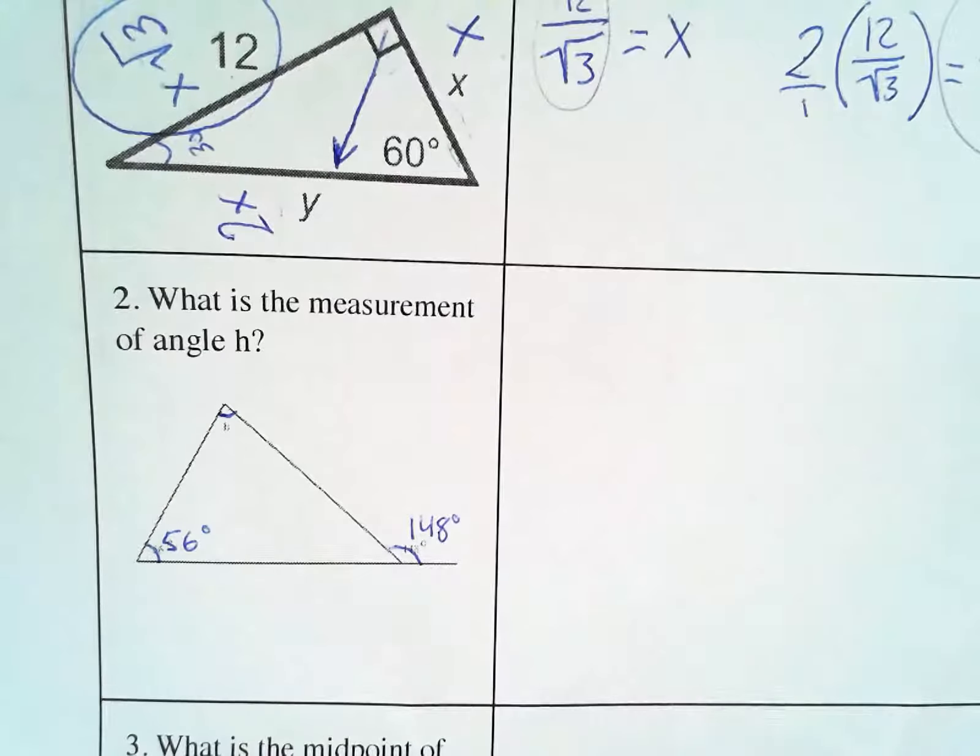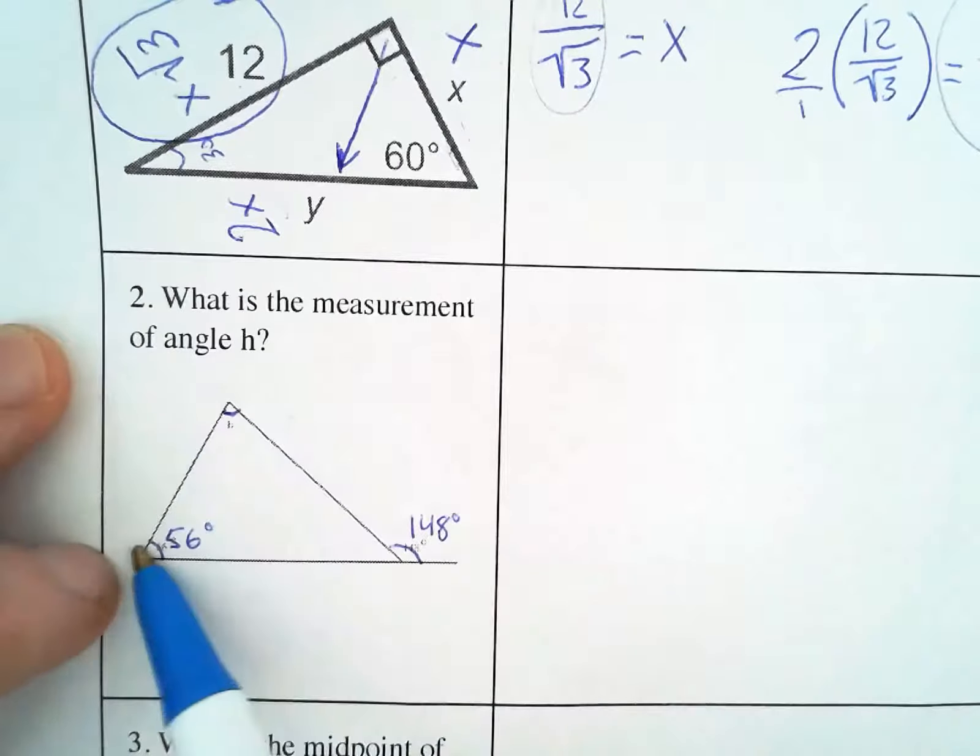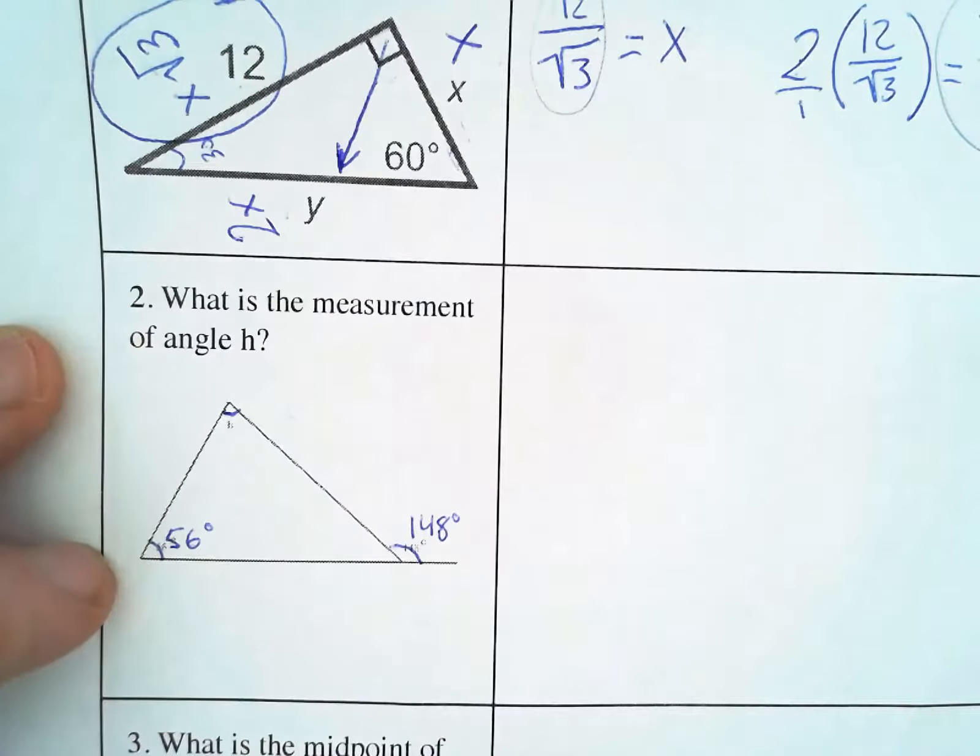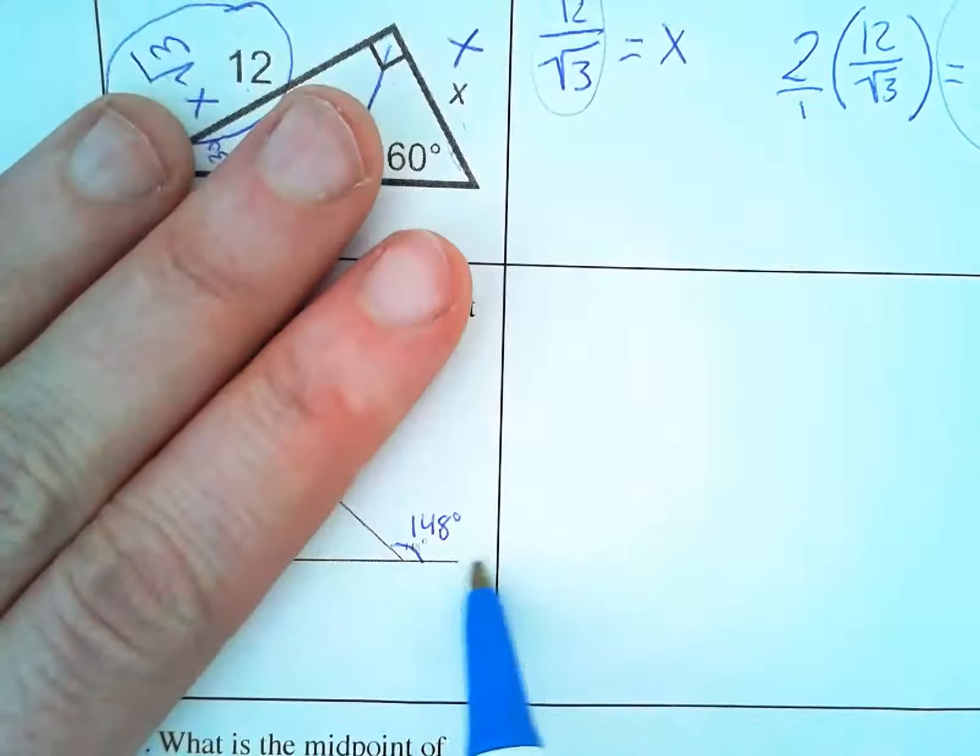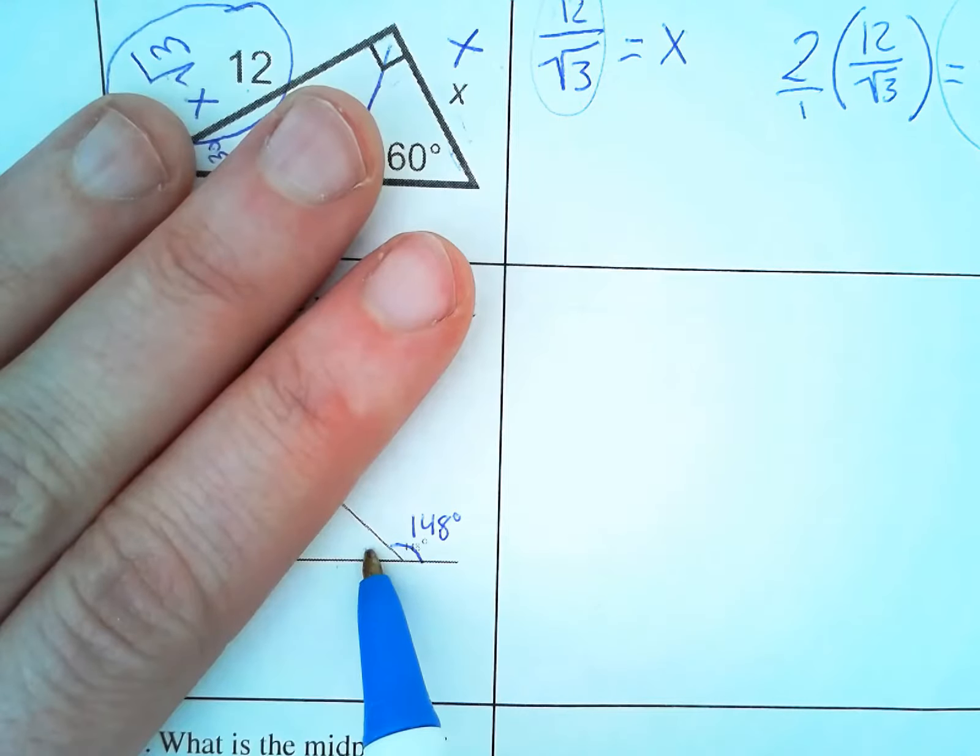So if we think about what we know here, we have a triangle, and we know that all of the interior angles of a triangle have to add up to 180. We also know that we have a straight line with this angle and this angle, and we know that this has to add up to 180.